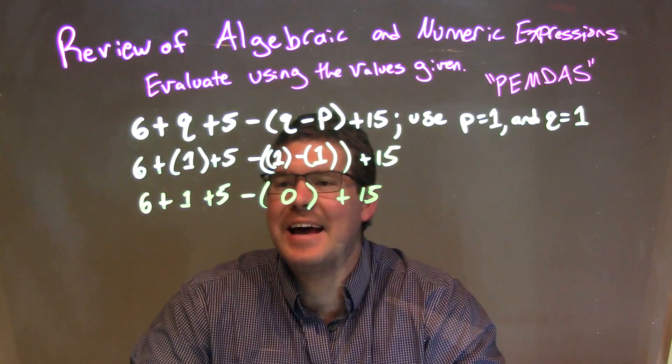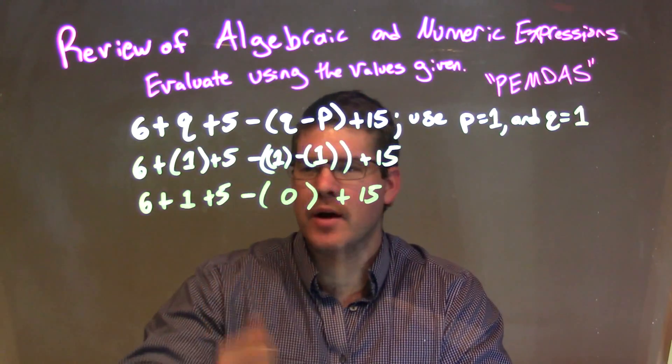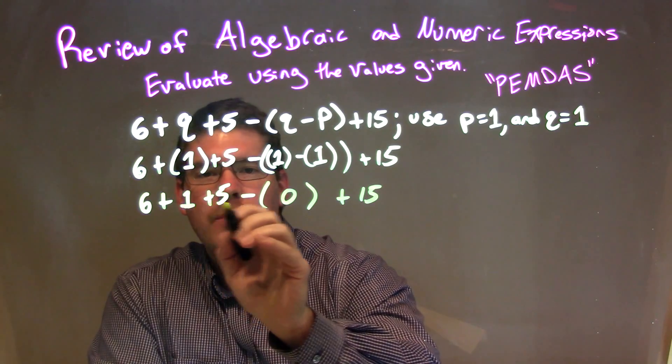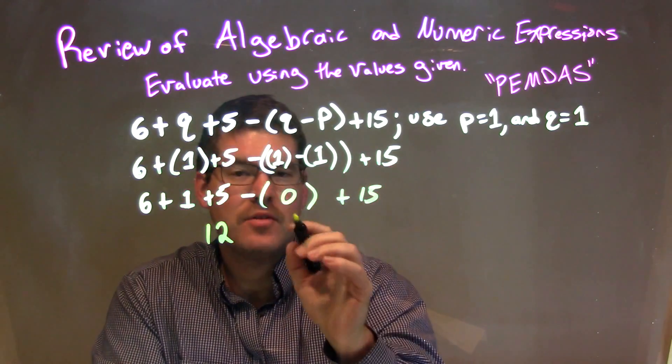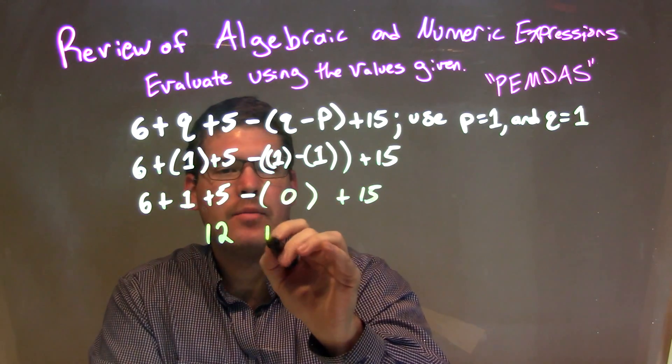Now we just have subtraction and addition to deal with. Let's go left to right here. 6 plus 1 is 7. 7 plus 5 is 12, so we have 12 right there. Minus 0 doesn't do anything, just leaves it there.